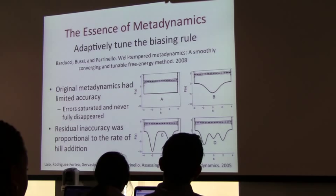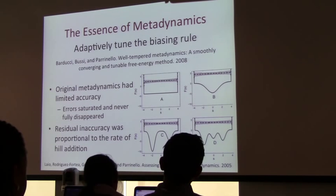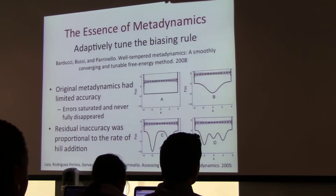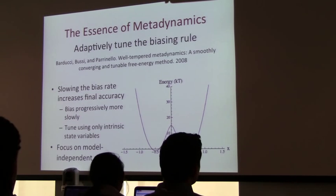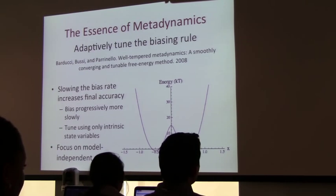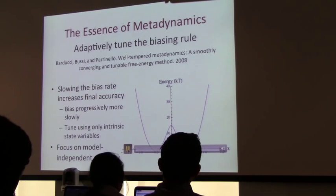A solution they came up with was to slow the bias rate. You can imagine starting metadynamics from a biased simulation — it would still flatten whatever bias existed at the beginning. What they realized was they could do metadynamics with a fast hill rate, stop it, use that bias as input for another metadynamics with a slower hill rate, and get less error. Then they realized they could do it smoothly and adaptively within a single simulation — just slow the bias rate sequentially as you run. You can do it intrinsically and automatically.